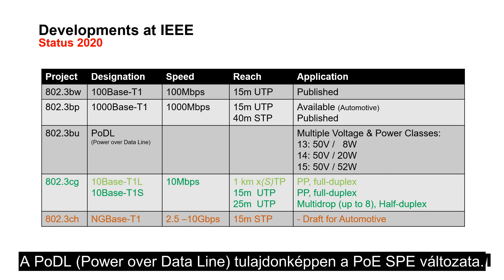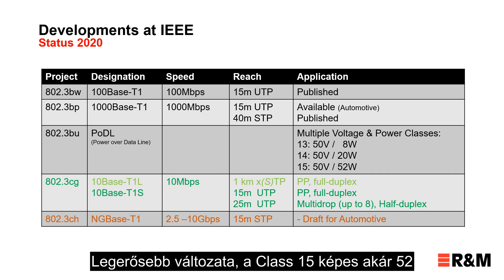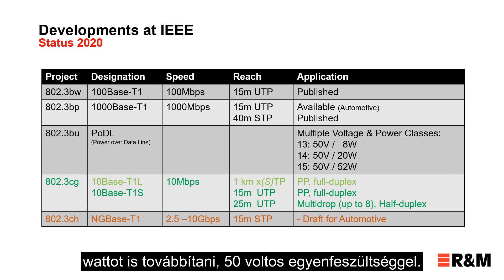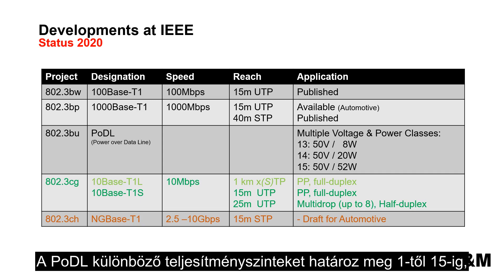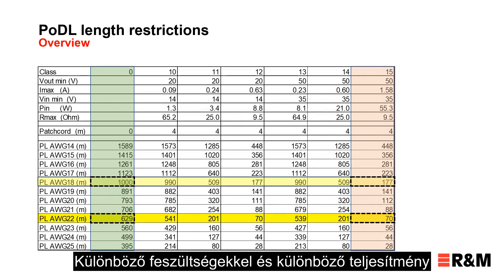PoDL — Power over Data Line — is the SPE version of PoE. It provides power over the same line as data. In its most powerful version, class 15, it is able to deliver up to 52 watts with a DC voltage of 50 volts. PoDL defines different power levels, 1 to 15, with different voltages and power levels.